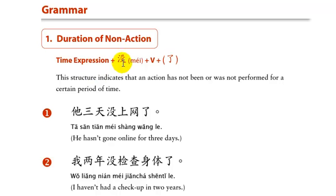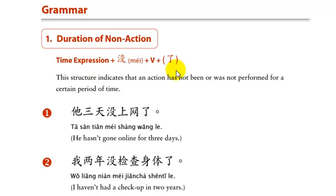Then 没, then our verb — skied or go skiing, which is 下雪 — and then 了. So: 我两年没下雪了. 我两年没下雪了. I haven't skied in two years.